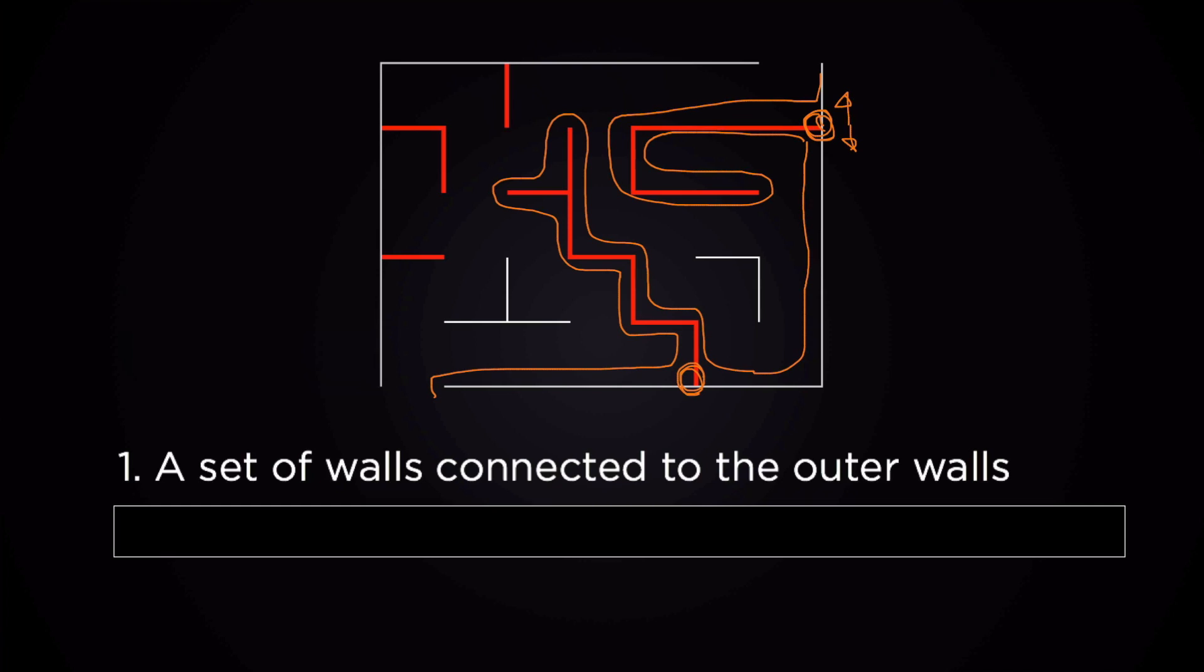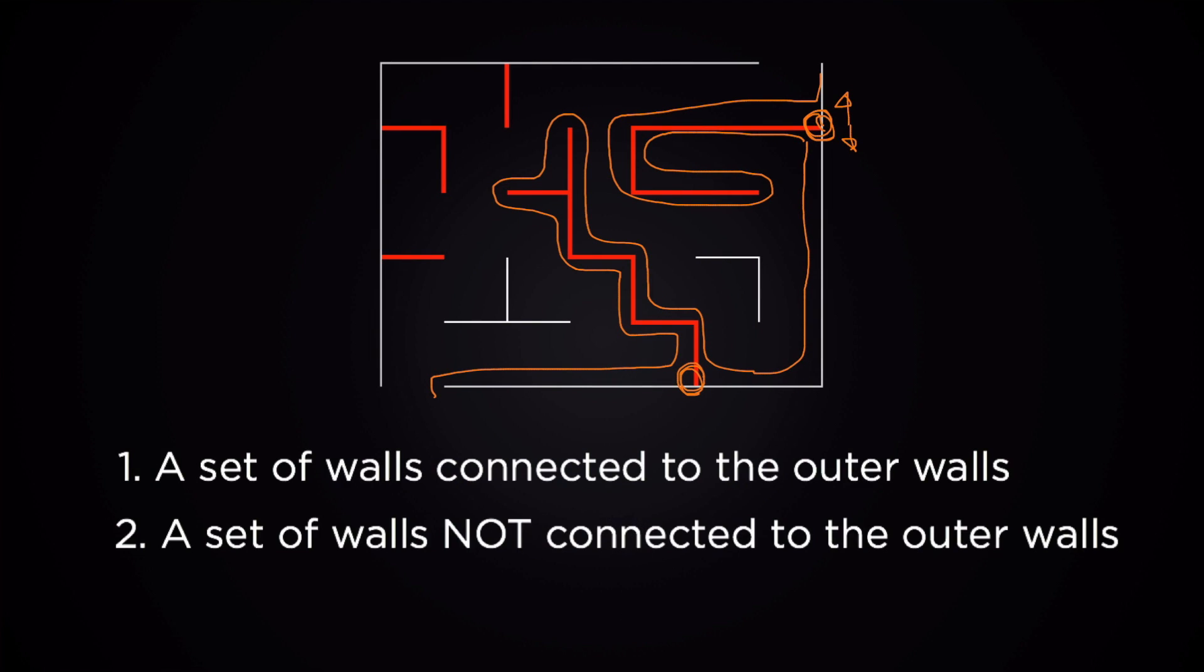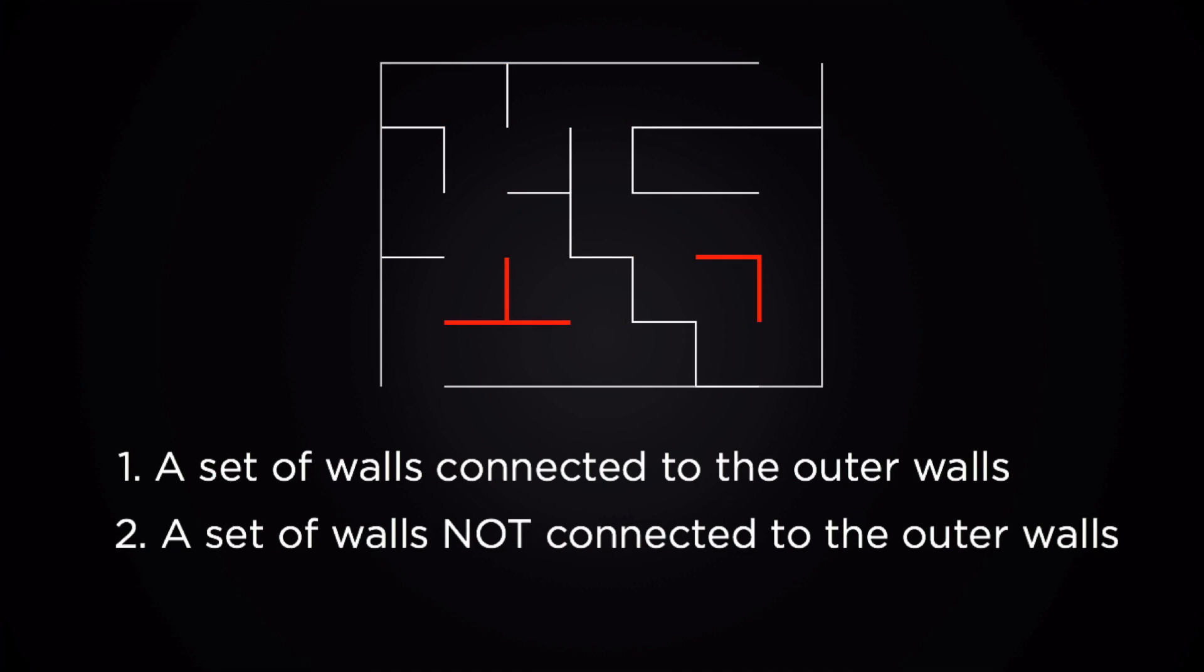Okay, the second type of inner walls in any maze is the set of walls that are not directly connected to the outer walls. And in this maze, there are these walls in red. And you can actually just ignore them because with the right hand strategy, you start at one of the outer walls and you're only gonna touch the walls that are directly connected to the outer walls.